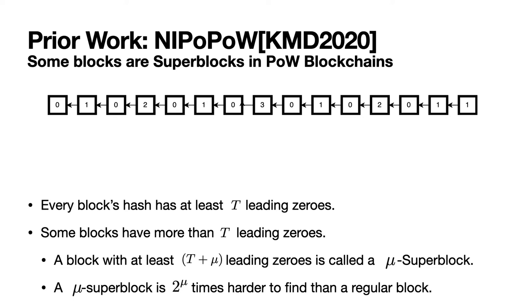NipoPow stands for Non-Interactive Proofs of Proof of Work. In proof-of-work blockchains, each block hash needs to have at least t leading zeros, where t is a pre-decided number. Naturally, some block hashes may have more than t leading zeros. If a block's hash has at least t + μ leading zeros for some non-negative integer μ, we call this block a μ-super block. In the example figure, we have 15 blocks and show the corresponding value of μ within each block. A μ-super block is 2^μ times harder to find than a regular block — this is the key idea that lets us get rid of some block headers.